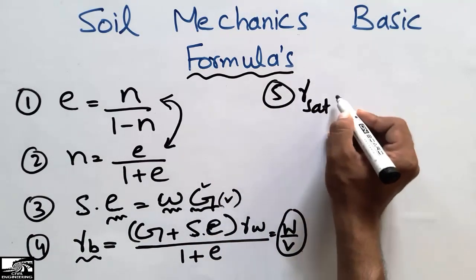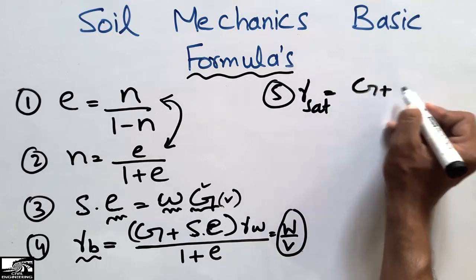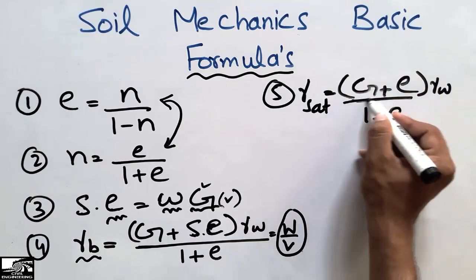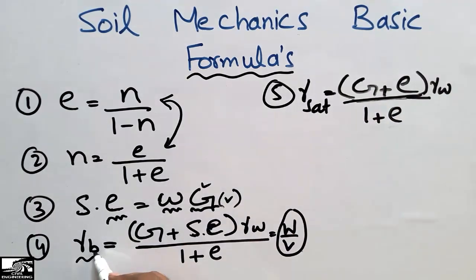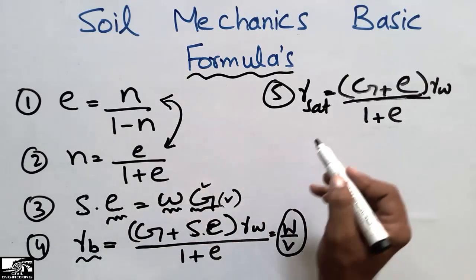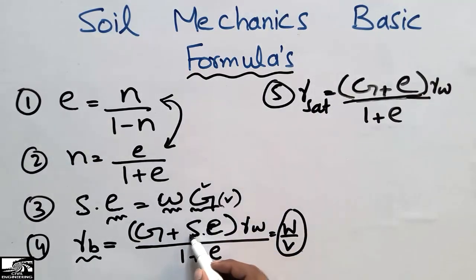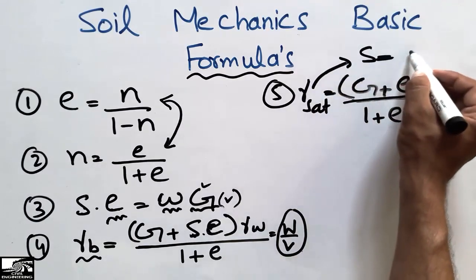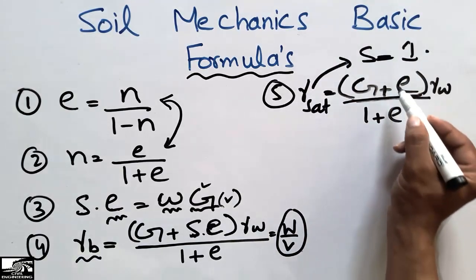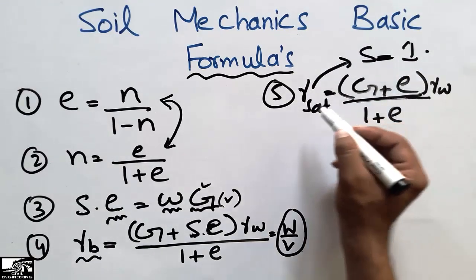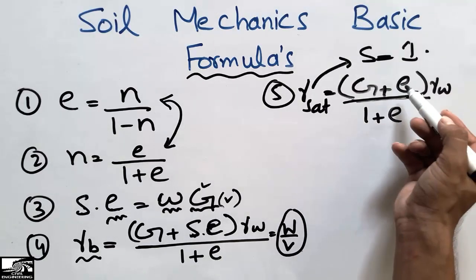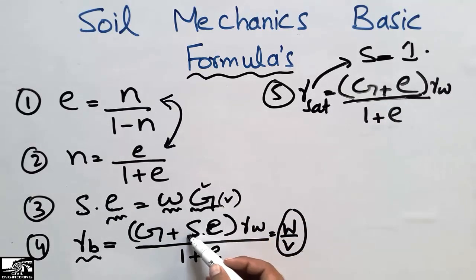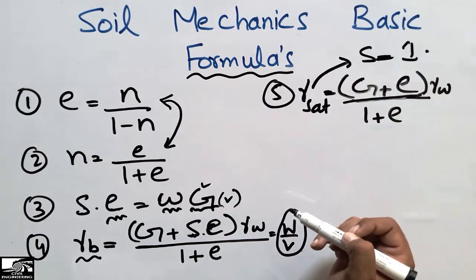The fifth formula is γ_saturated = (G + e) × γ_w / (1 + e). The only difference between γ_saturated and γ_bulk is that here S is removed, because in the saturated case the degree of saturation equals 1. So this formula can be easily learned from the bulk unit weight formula by simply setting S = 1.